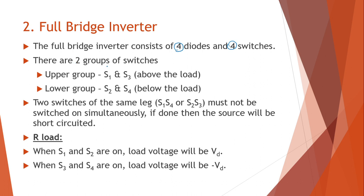There are two groups of switches in the full bridge inverter. You have the upper group, that is the switches which are above the load — S1 and S3 — and you have two switches which are below the load, that is S2 and S4.